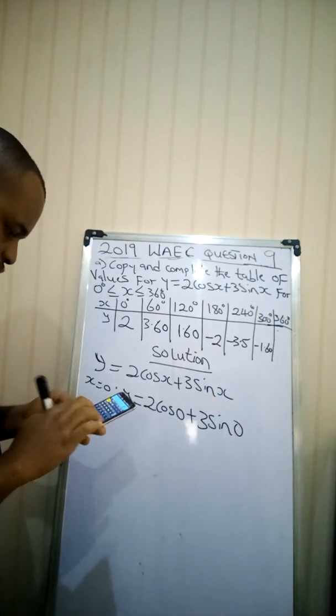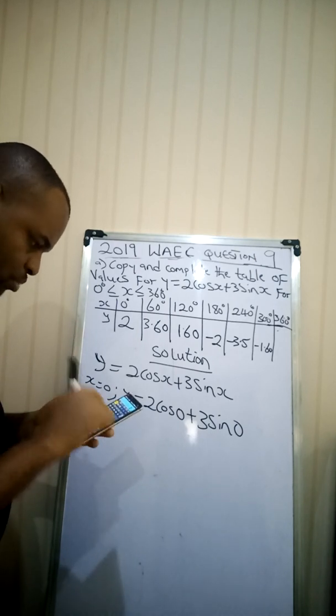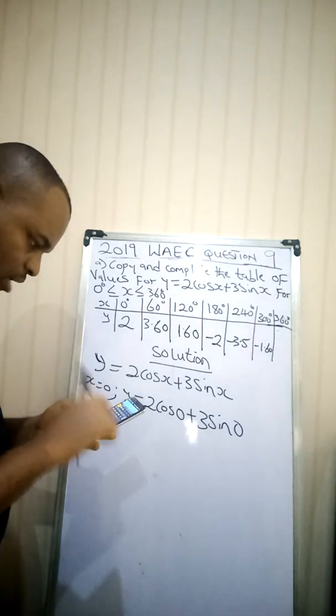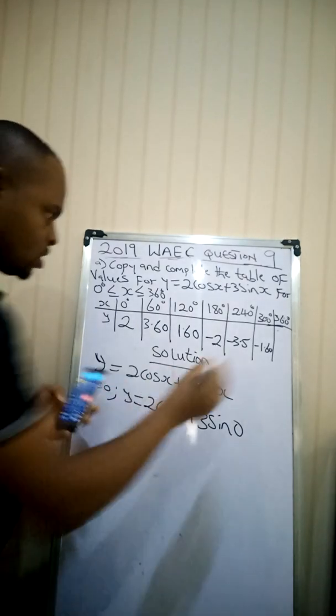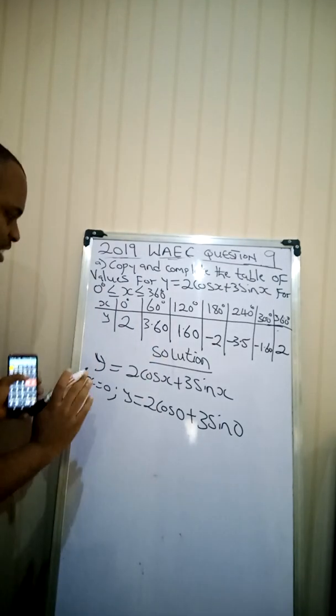Then the last one, 360. Introduce the value 2 multiplied by cos(360) plus, open a bracket, 3 multiplied by sin(360). Close the brackets. Equal to. I'm having this as 2. Alright. We've been able to complete the table, which is the A part of this question.